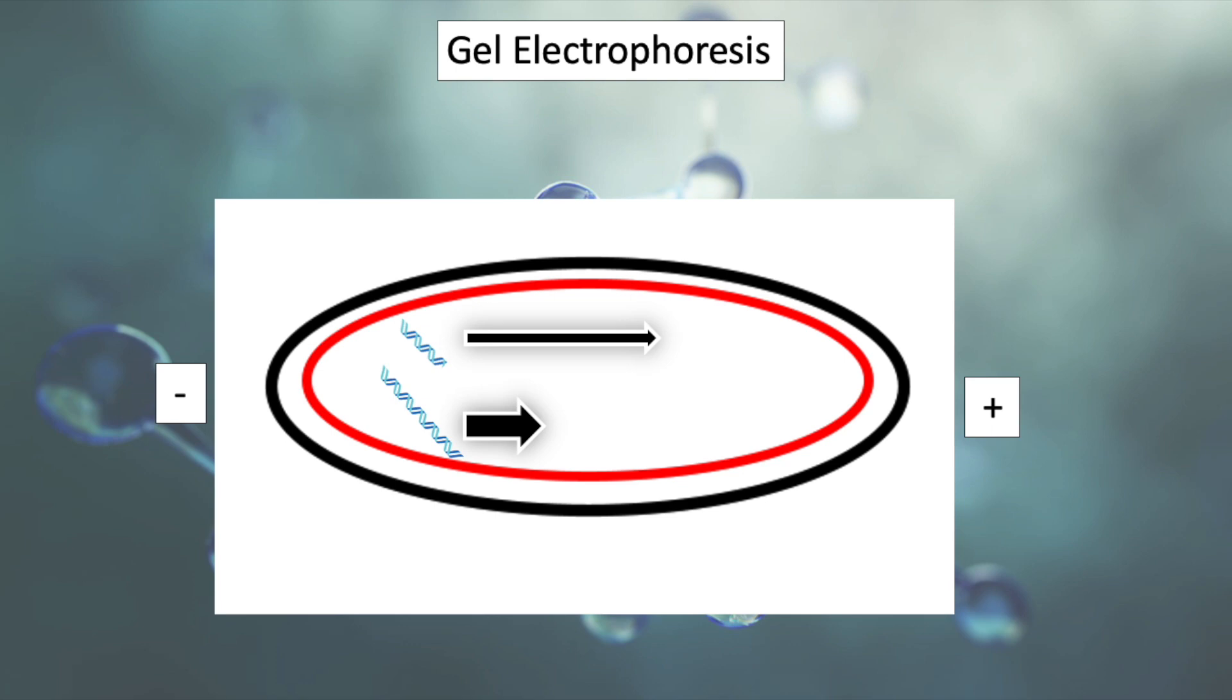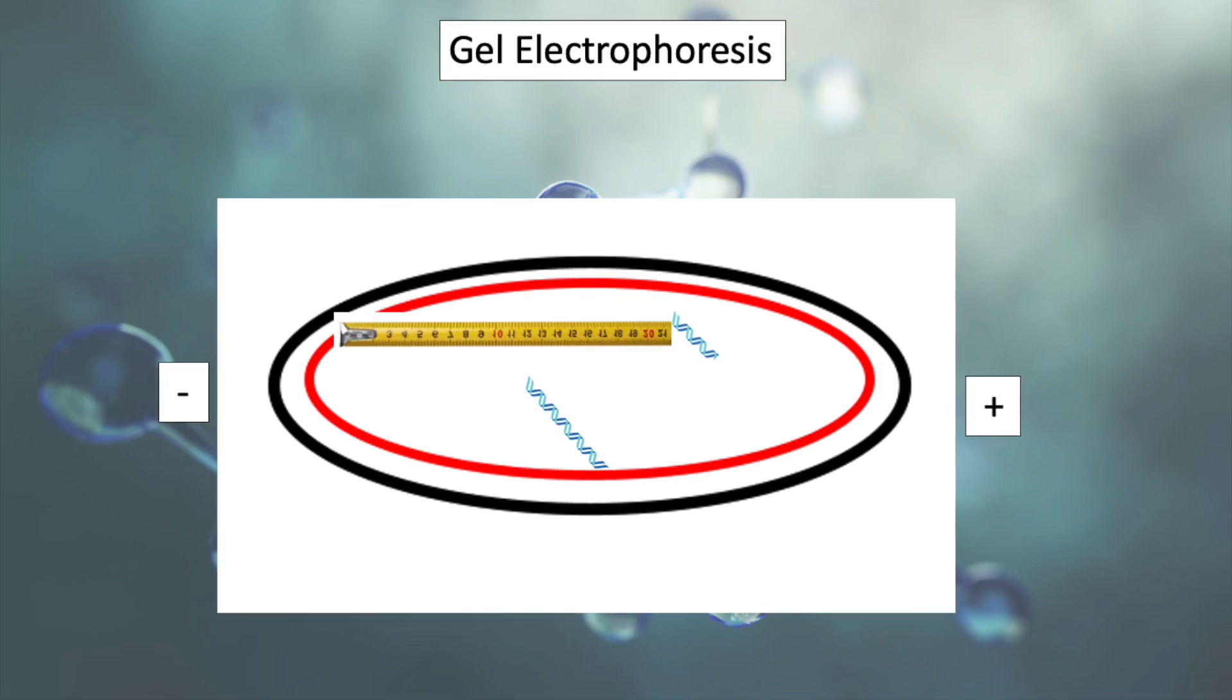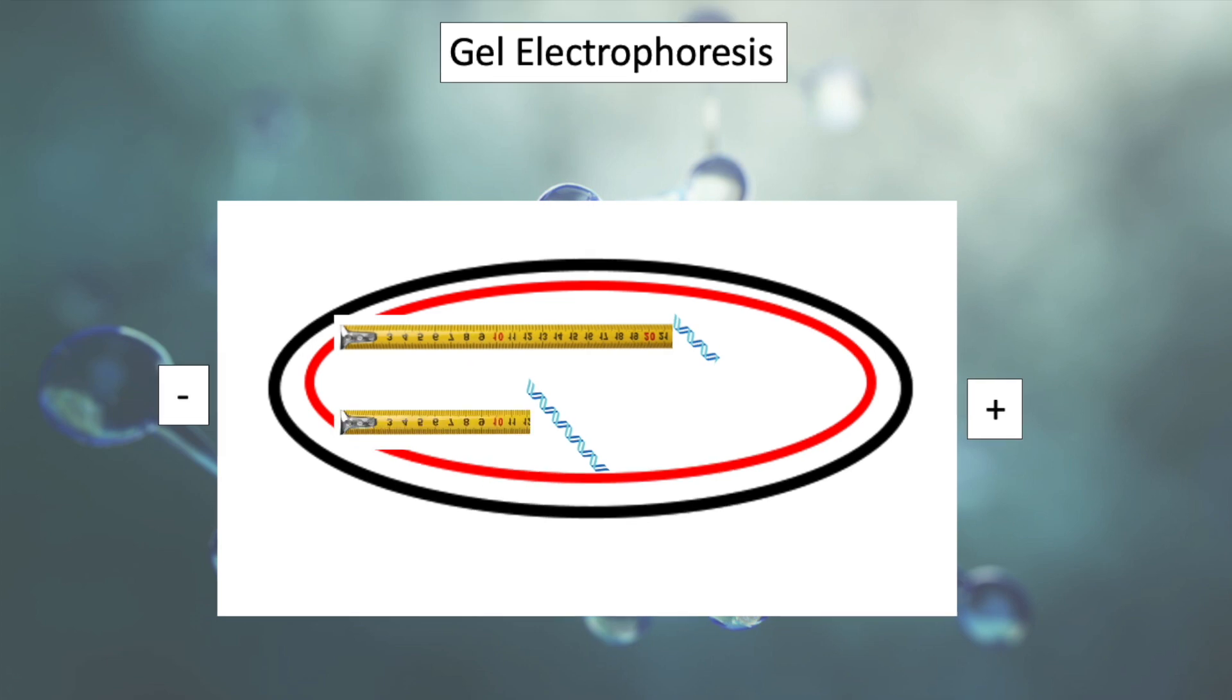Larger DNA segments will travel slower and shorter, lighter segments will travel quickly. But by stopping the charged particles before they can carry them completely off the gel, we can approximate how large the DNA is based on its rate of movement through the gel.